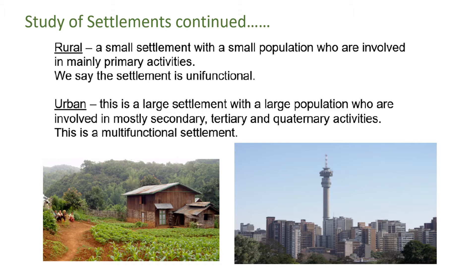The biggest difference would be population size. A rural settlement is unifunctional, so most of the population are involved in primary activities. Whereas in an urban settlement, we are talking about a multifunctional settlement — secondary, tertiary, and quaternary activities.